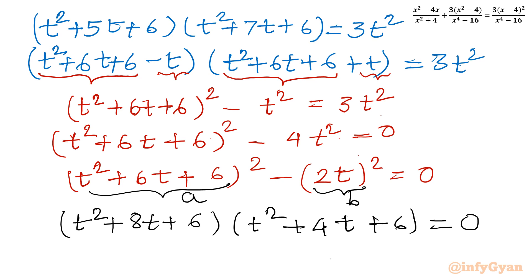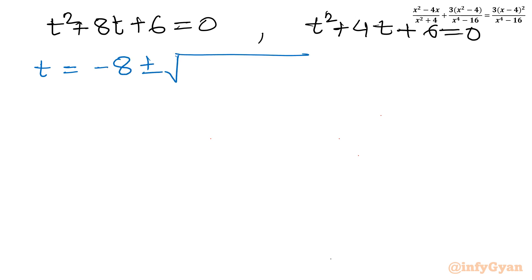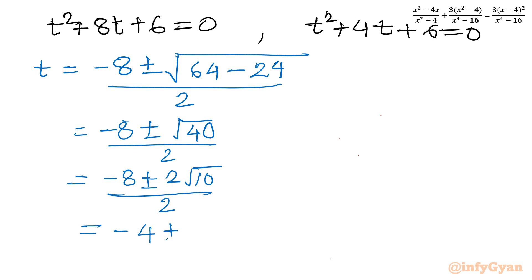First equation: t² + 8t + 6 = 0. Applying the quadratic formula: t = (-8 ± √(64 - 24)) / 2 = (-8 ± √40) / 2 = (-8 ± 2√10) / 2, so t = -4 ± √10. For the second equation: t² + 4t + 6 = 0, the discriminant is b² - 4ac = 16 - 24 = -8, which is negative, so it gives complex solutions — we reject this.